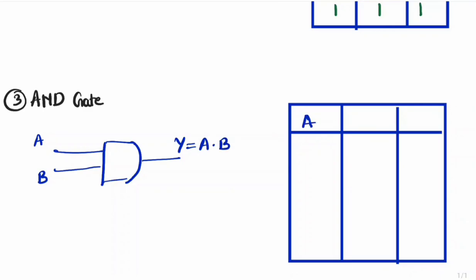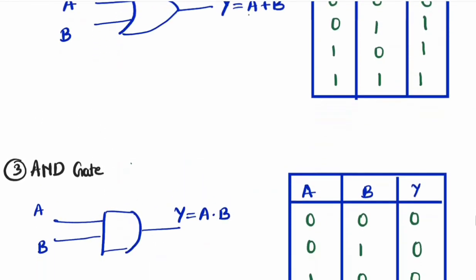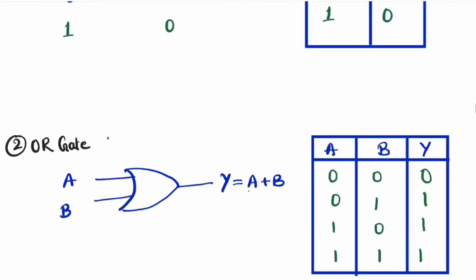For the AND gate truth table with inputs A and B and output Y: 0 × 0 = 0, 0 × 1 = 0, 1 × 0 = 0, and 1 × 1 = 1. So the AND gate is essentially a multiplication gate. To summarize: the AND gate is multiplication, the OR gate is addition, and the NOT gate is inversion.